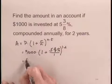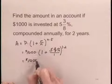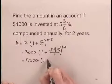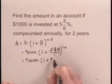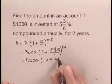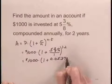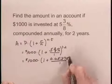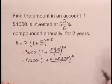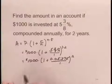And now we just need to do the computation. Going to write 5 and 3/8 percent as 0.05375. And I'm going to multiply the 1 and the 2 here. So I have this amount squared times $1,000.